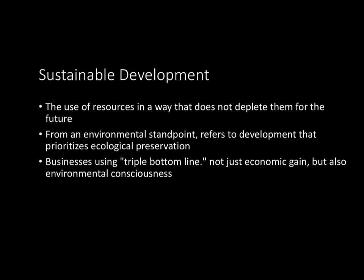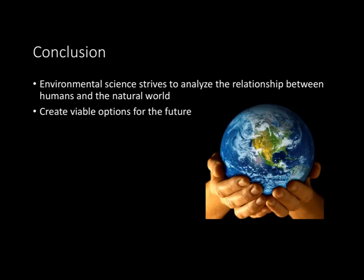Sustainable development. A popular term in environmental science is sustainable development. Although it has many meanings, it is often used to describe developments that prioritize ecological preservation. Along the same lines, a somewhat new term known as the triple bottom line refers to businesses not only prioritizing economic gain, but also keeping track of environmental effects and consequences. In conclusion, environmental science strives to analyze the relationship between humans and the natural world, and environmental scientists aim to create viable options for the future.